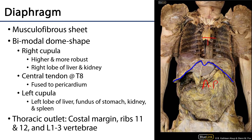That musculofibrous sheet has a bimodal dome shape to it. On the right side it consists of the most robust right cupula, separated from the less robust left cupula, and the two cupulae are separated by the central tendon. That central tendon has a very close physical relationship — in fact it's bonded to the fibrous pericardium.